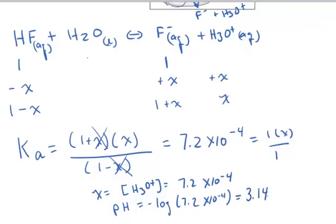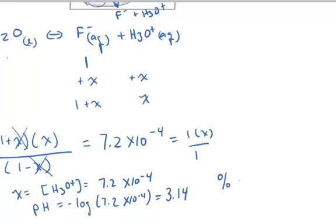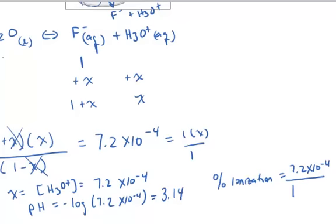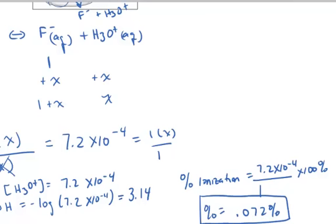The pH has risen from 1.6 to 3.14 in the presence of the fluoride anion — the ionization has been suppressed. The percent ionization equals the amount ionized (X) divided by the initial concentration times 100%. X is 7.2 times 10 to the minus 4, divided by the initial concentration of 1 molar, times 100%, which equals 0.072%.